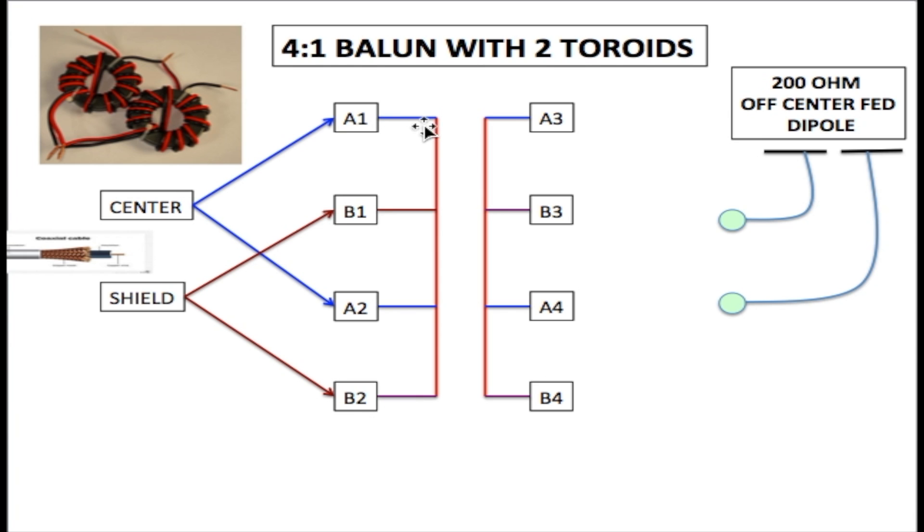Now it goes through the transformer area so the output for A1 is A3, B1 is B3, A2 is A4, and B2 is B4. So we have our output here.